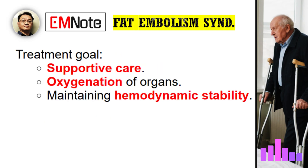If FES is suspected or confirmed, what's the main goal of treatment? The absolute main goal is supportive care — there's no specific cure or antidote for FES itself. It focuses on two main things: adequately oxygenating the vital organs — brain, heart, kidneys — despite the compromised microcirculation, and maintaining hemodynamic stability. This often involves supplemental oxygen, starting with a nasal cannula or mask, and if respiratory failure worsens, mechanical ventilation. Maintaining fluid balance is important, and albumin administration is sometimes used to help maintain intravascular volume and bind some of those toxic free fatty acids.